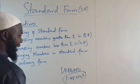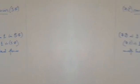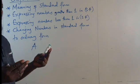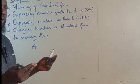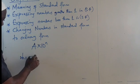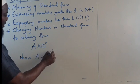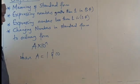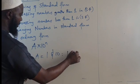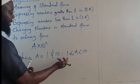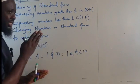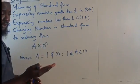Standard form has a particular format that is followed. When we want to write a number in standard form, it will be written as a product of two numbers: A multiplied by 10 raised to the power N. Where A is a number between 1 and 10, but not up to 10. That is, 1 ≤ A < 10. The number must be at least 1 but cannot be 10, and there should be one digit before the decimal point.